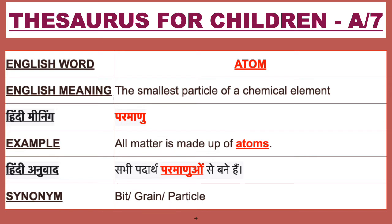Our next word is Atom. English meaning of Atom is the smallest particle of a chemical element. Atom ka Hindi meaning hai Purmanu. For example, all matter is made up of Atoms. Isay Hindi mein bolenge, sabhi padhaat Purmanu se banen hai. Synonym of Atom is bit, grain, particle.